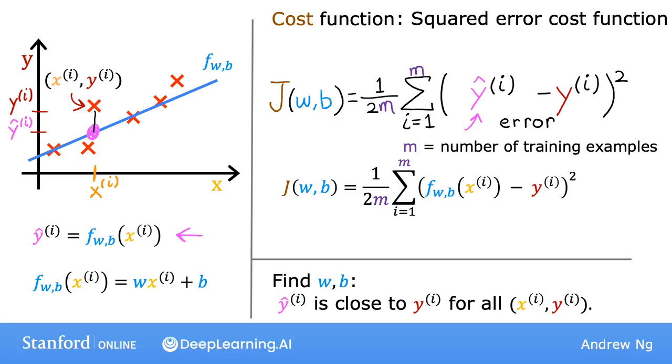Eventually, we're going to want to find values of w and b that make the cost function small. But before going there, let's first gain more intuition about what J of w, b is really computing. Let's go on to the next video, where we'll step through one example of what the cost function is really computing — I hope that will help you build intuition about what it means if J of w, b is large versus if the cost is small.